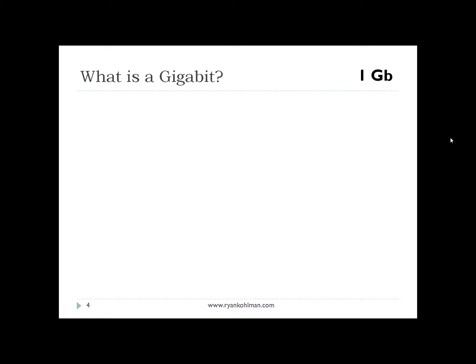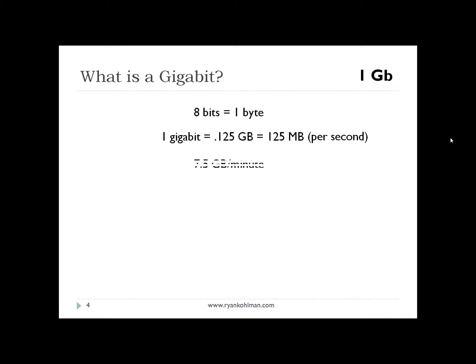So what exactly is a gigabit? Google Fiber advertises their speed at a gigabit, or one Gb. When looking at digital storage: eight bits equals one byte, and one gigabit equals 0.125 gigabytes — or 125 megabytes. So Google Fiber offers 125 megabytes per second transfer speed. That also translates to about 7.5 gigabytes per minute.